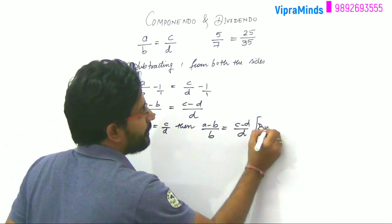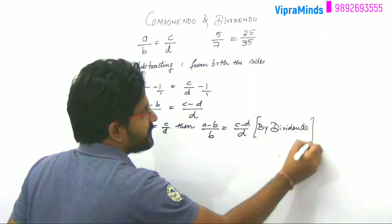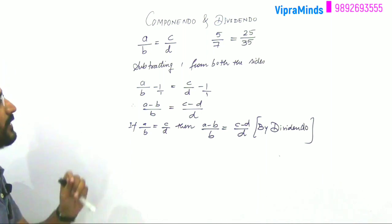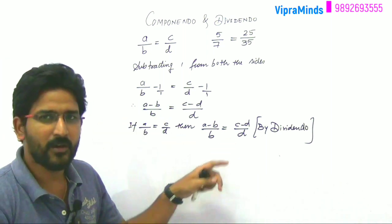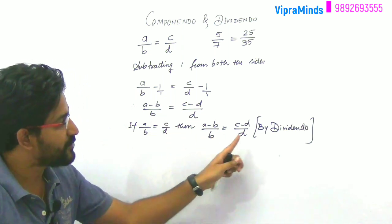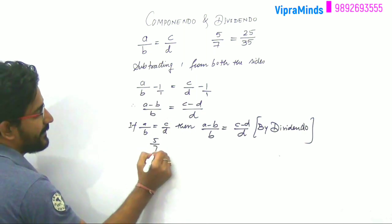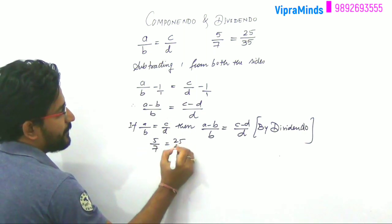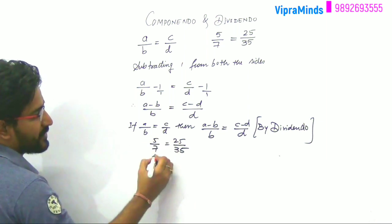This is by Dividendo property. अगर आपको दो ratios equal दिया है, then you can apply this property also or Componendo property also. Then the ratio will remain the same, दोनो जो ratio. Now जिसे हमने example लिया, 5 by 7 equals 25 by 35. तो क्या होगा? Dividendo property यूज़ करते हैं. Let's see.